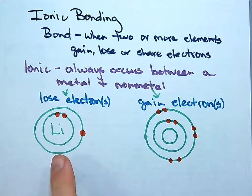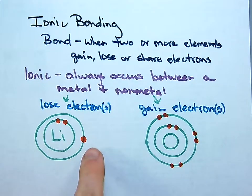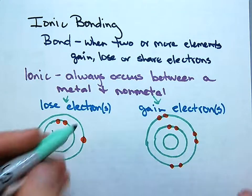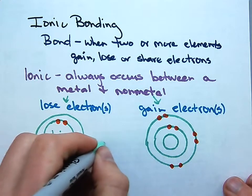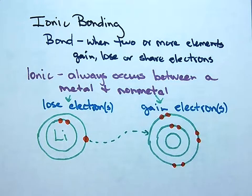Lithium wants to have a full valence shell. What's easier: for lithium to gain seven electrons, or to lose one electron? Lose one — it just makes sense for lithium to lose one electron. And oxygen, since it has only two empty spots in its outer shell, it makes sense for oxygen to gain those electrons.